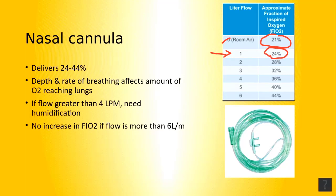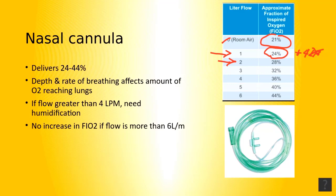Every time you increase it by 1 liter, it always increases the FiO2 by 4%. So if you have oxygen through a nasal cannula set at 2 liters per minute, it's going to increase by 4 again, so it'll be 28%. Every liter increases the FiO2 by 4%.